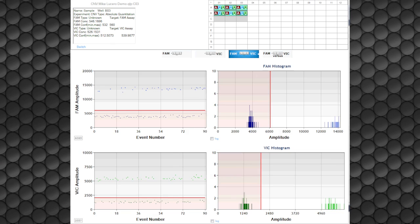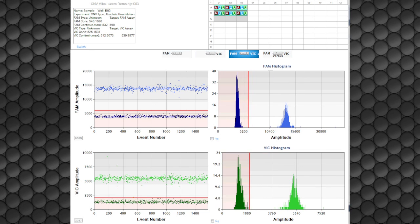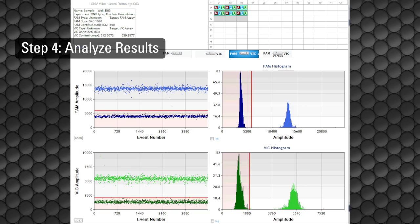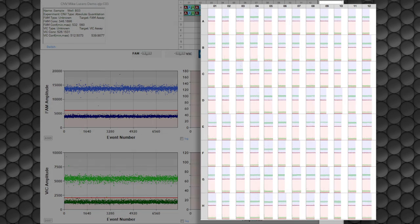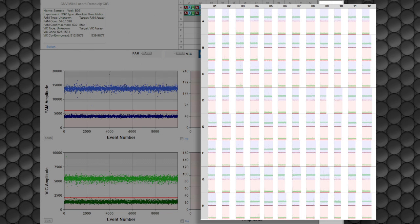As each droplet is read, the data are recorded graphically by Qantasoft software. The software records the positive and negative droplets in each sample and plots the droplet by droplet fluorescence. This allows the data to be analyzed and visualized according to specific application and research requirements.